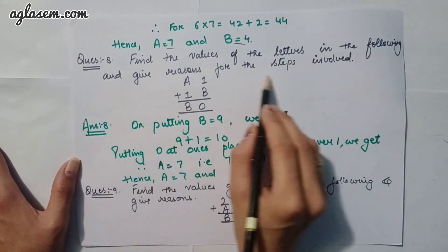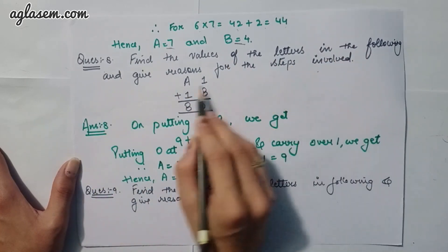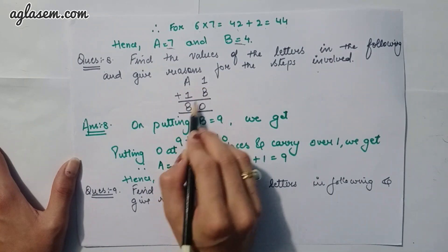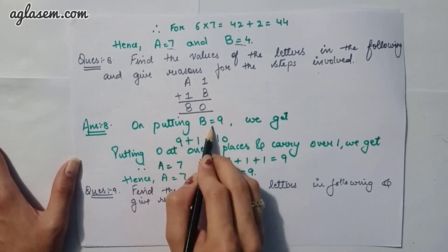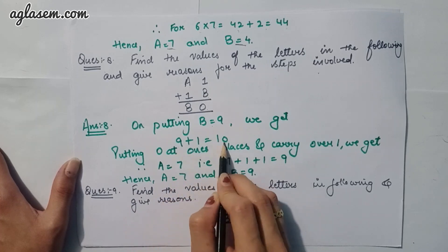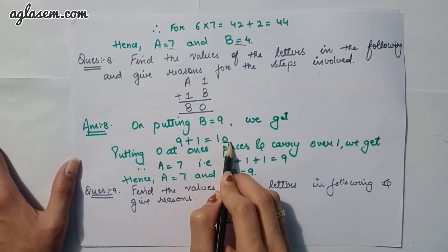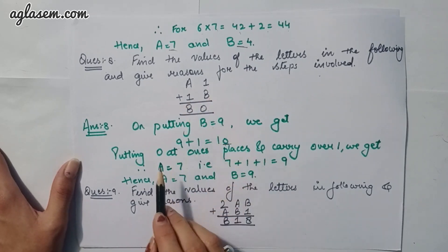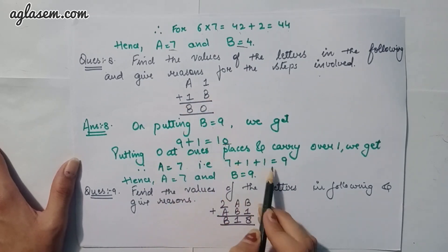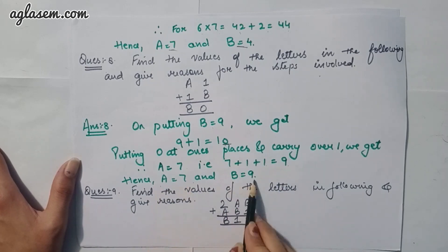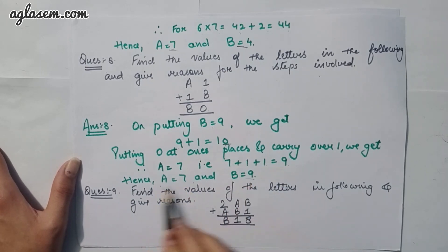Moving to the eighth question: A11B (addition) = B0. Putting B = 9: 9 + 1 = 10, ones digit is 0. Therefore A = 7, because 7 + 1 + 1 = 9. Hence A = 7 and B = 9.